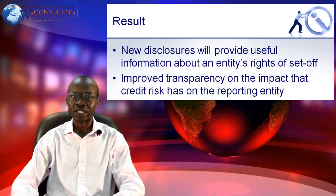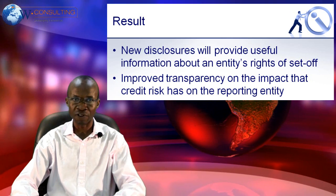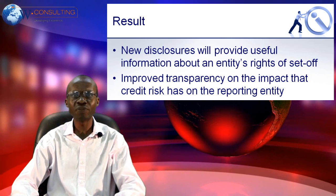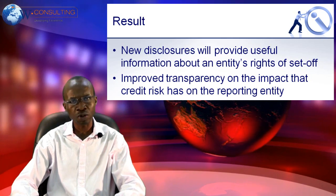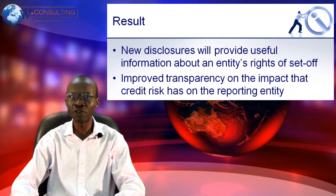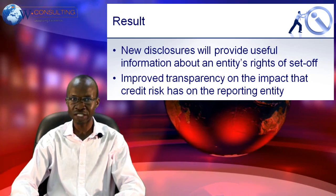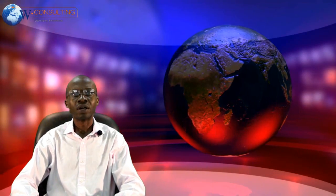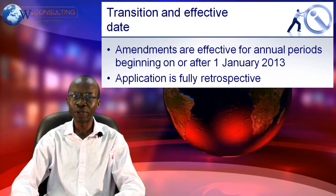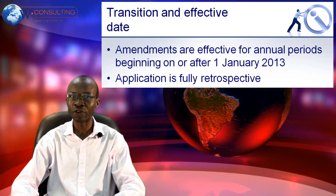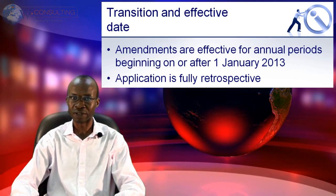The result of all of this is that additional disclosures will now be required when it comes to IFRS 7, which will provide information about an entity's rights of set-off, and hopefully this will all result in improved transparency on the impact that credit risk has on the reporting organization. These amendments are effective for annual periods beginning on or after 1 January 2013, and the application of this is fully retrospective.